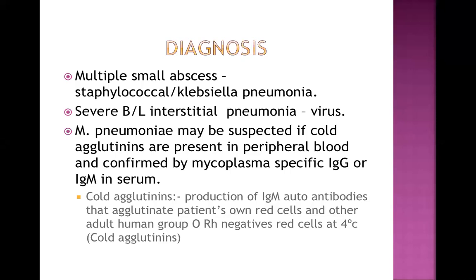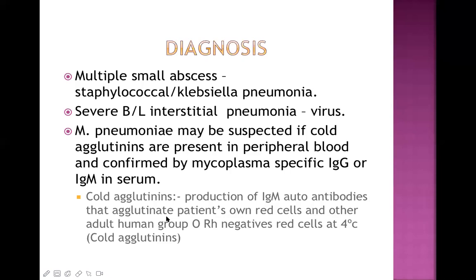We don't need to give antibiotics in viral pneumonia usually. In Mycoplasma pneumonia, cold agglutinins are present in peripheral blood. These are IgM-type autoantibodies that agglutinate the patient's own red cells and usually react at very low temperatures around 4°C — that's why they are called cold agglutinins. They are mainly IgM type. Other causes of cold agglutinins include lymphoma and Epstein-Barr virus infection.